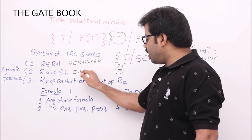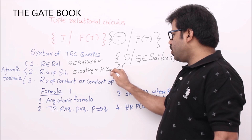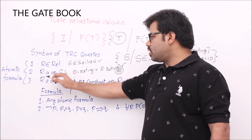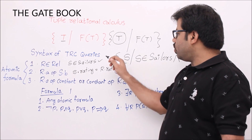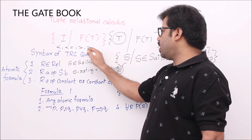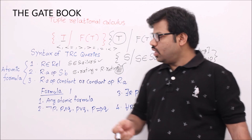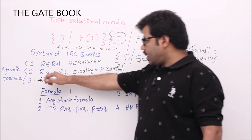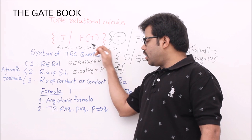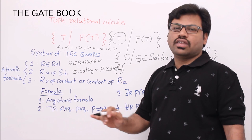The second kind of atomic formula is a comparison of two columns. For example, S is a sailor, and you can write S.rating equal to some other table R.rating — you are comparing two tuples' ratings. Here op is a relational operator: less than, less than or equal to, greater than, greater than or equal to, equal to, or not equal to. The third atomic formula is a column value R.A compared with a constant using any of those operators. Example: S.rating equal to 10 falls in this model. All three are atomic formulas.